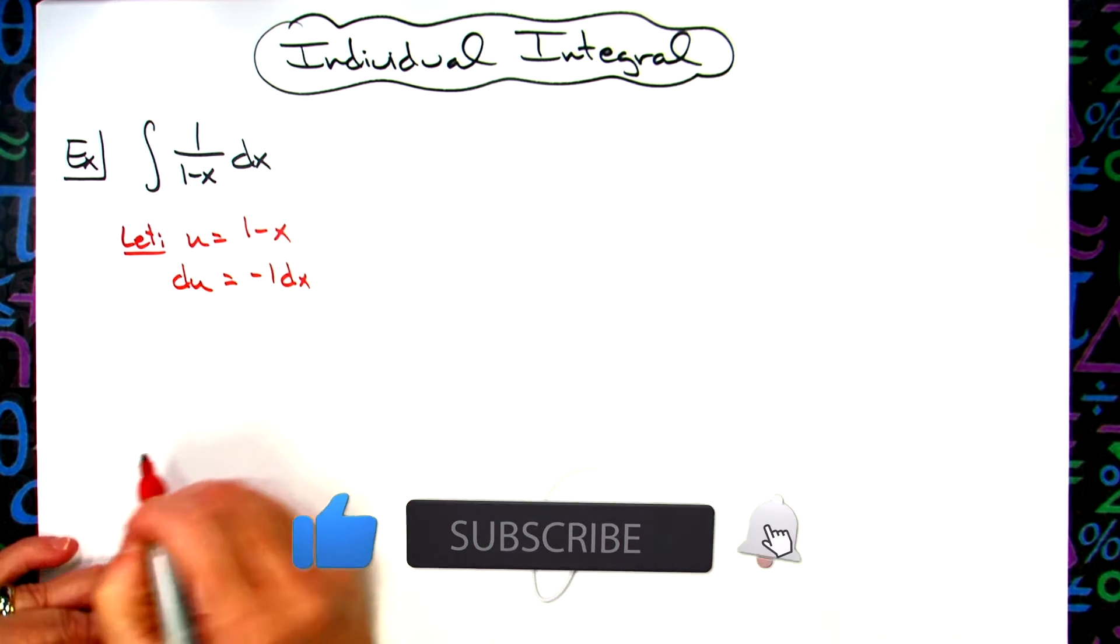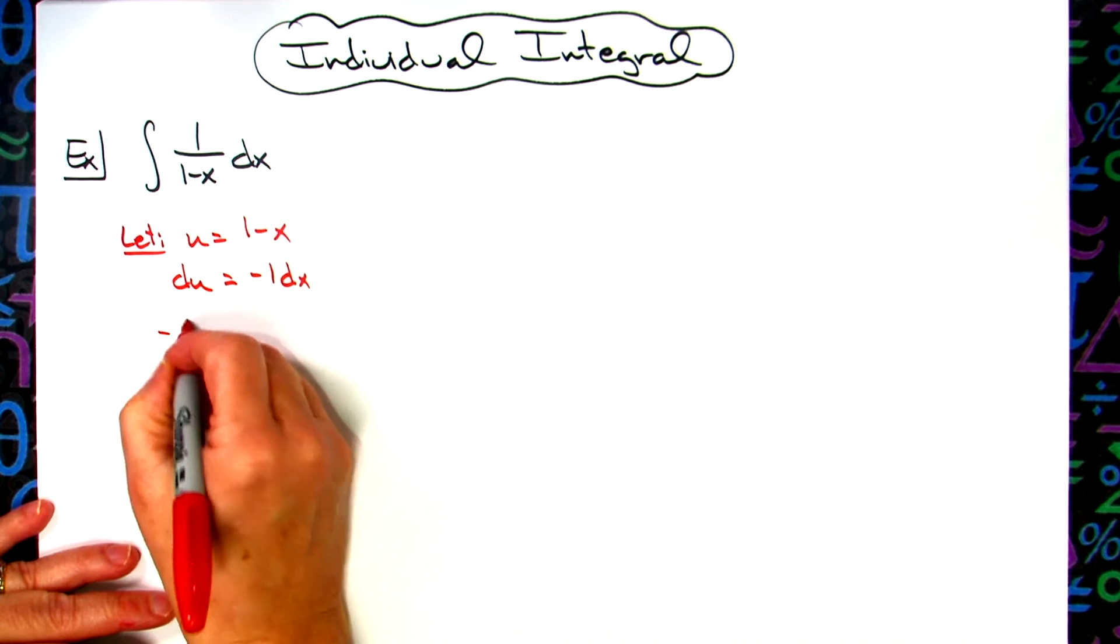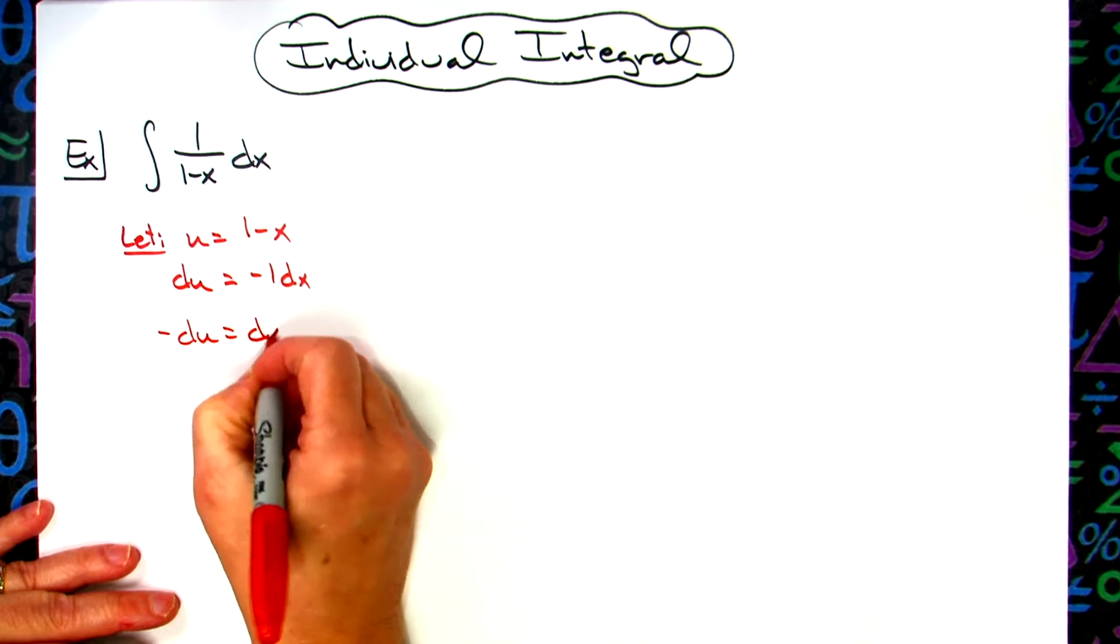That one's not really important there, but the negative sign is. Let's go ahead and solve all the way down for dx. So we'll have negative du is equal to dx.